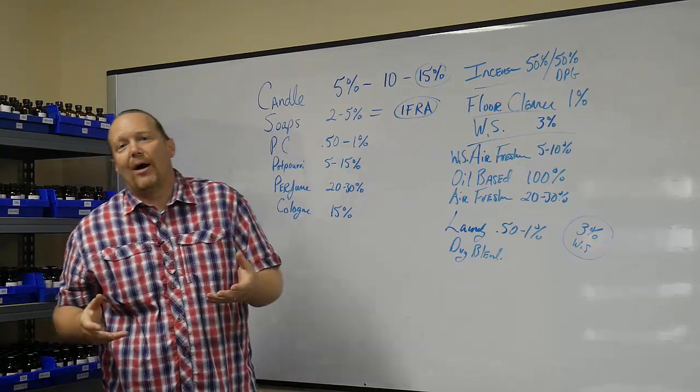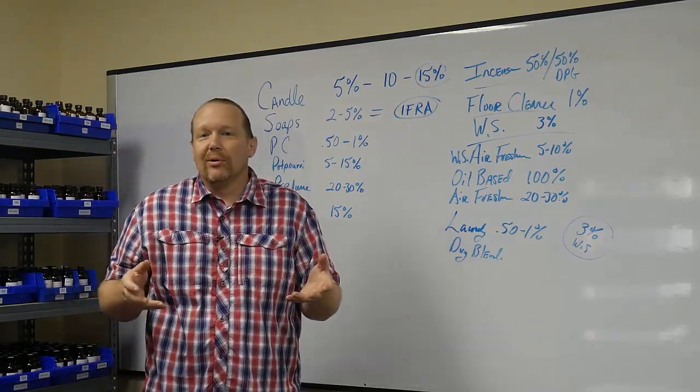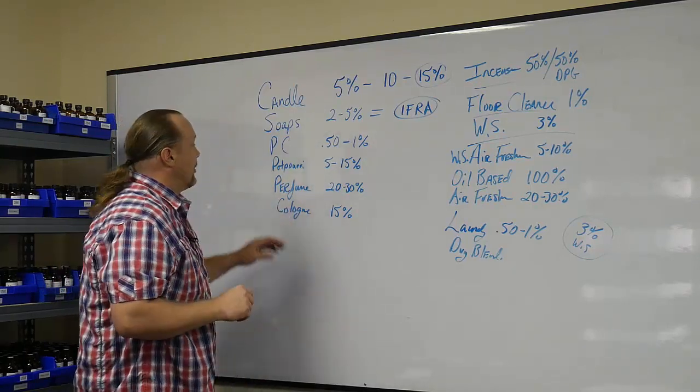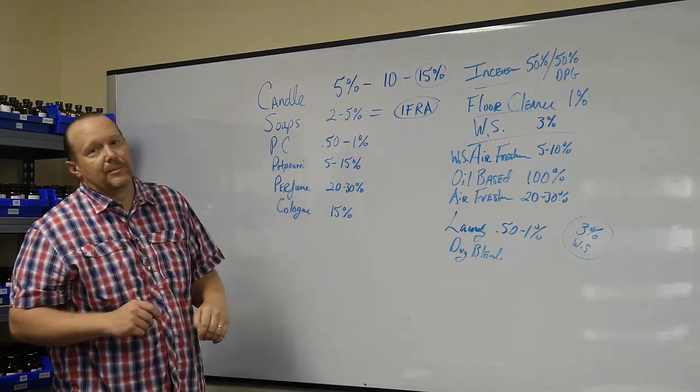Potpourri. This is going to be dried flowers, cinnamon brooms, those types of things. They're going to be sprayed or misted. But with those products, 5% to 15%.